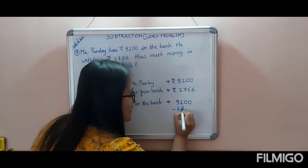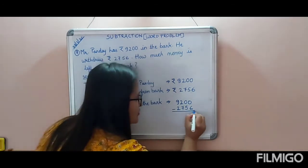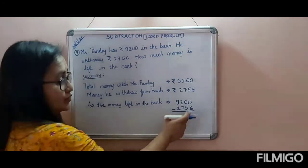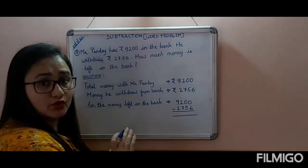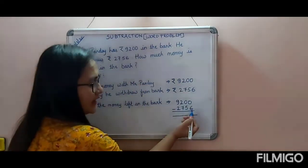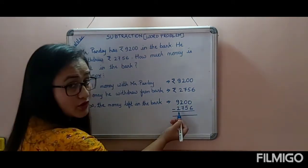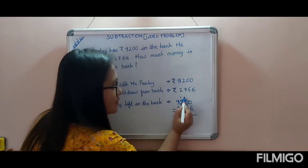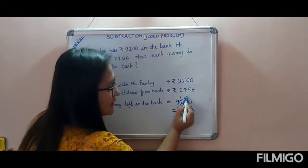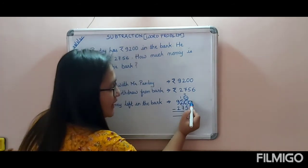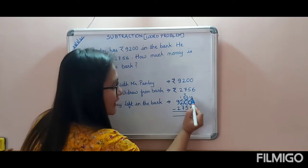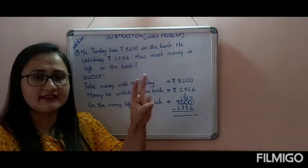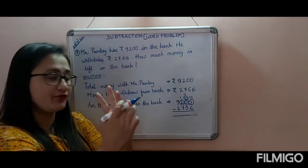Now look at the board. In the ones place there is 6 and there is 0 — can we subtract? No. You have to borrow. Can you borrow from the tens place? No, there is also 0. So you move to the hundreds place and borrow one — 0 becomes 10, and 1 is left. Then borrow from here to the ones place — 9 becomes 10. Keep 10 in your mind, count after 6: seven, eight, nine, ten — that is 4 fingers, write 4.